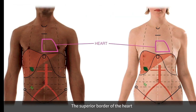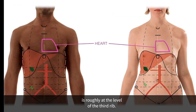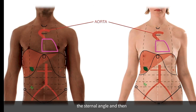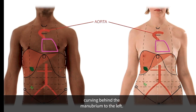The superior border of the heart is roughly at the level of the third rib. We show here now the aorta coursing off to the right, just to the right of the sternal angle, and then curving behind the manubrium to the left.